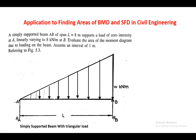A simply supported beam AB of span L = 8 meters supports a load of zero intensity at A and 8 kN/m at the other end. We need to evaluate the area of the bending moment diagram due to this loading, assuming an interval of one meter. The given figure shows the UVL - this is not the bending moment diagram, it is the loading diagram.